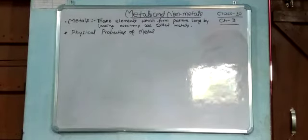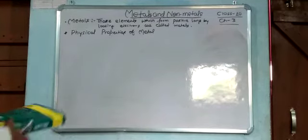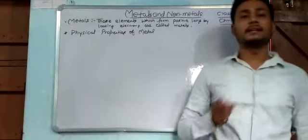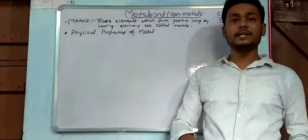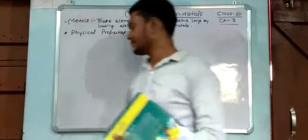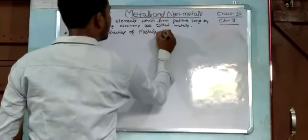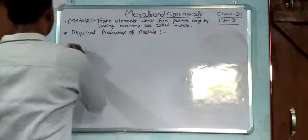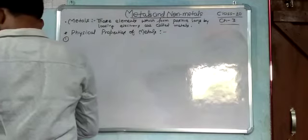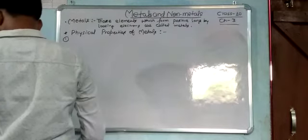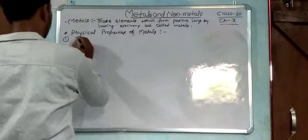We already learned about the physical properties of metals in previous classes, but we need to recall them in this class. First property: metallic luster.